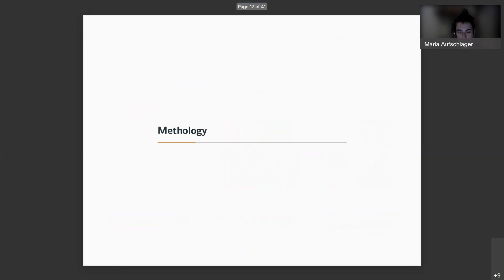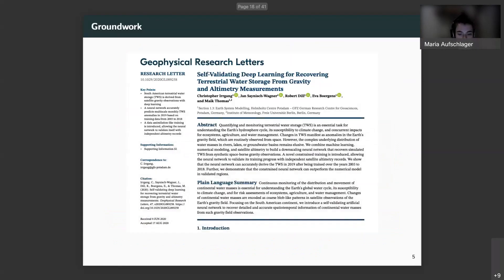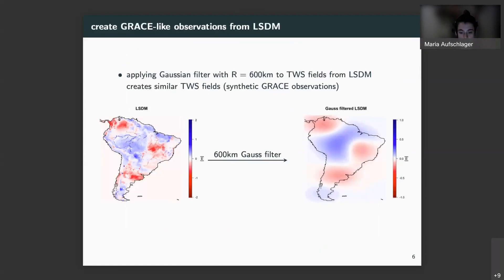So, how did I set up a deep learning algorithm? This is a continuation of the published paper by Dr. Irrgang. He already showed successfully a downscaling of terrestrial water storage to a half-degree grid. And in a similar fashion, I created a convolutional neural network for downscaling TWS. As a first step, synthetic GRACE observations had to be created, and we created them from LSDM fields. Monthly means got calculated from daily LSDM results, and a Gaussian filter with a radius of 600 kilometers got applied for the typical spatial smoothing of GRACE data.